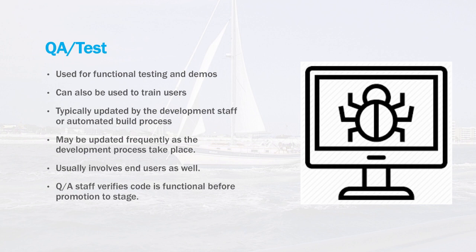End users are typically involved in this environment — they want to see software well before it's released. The QA staff verifies that all code is functional before it moves out of this environment. The last step before code leaves QA and testing and moves to staging is a sign-off from the QA staff confirming that all functionality is ready to go.